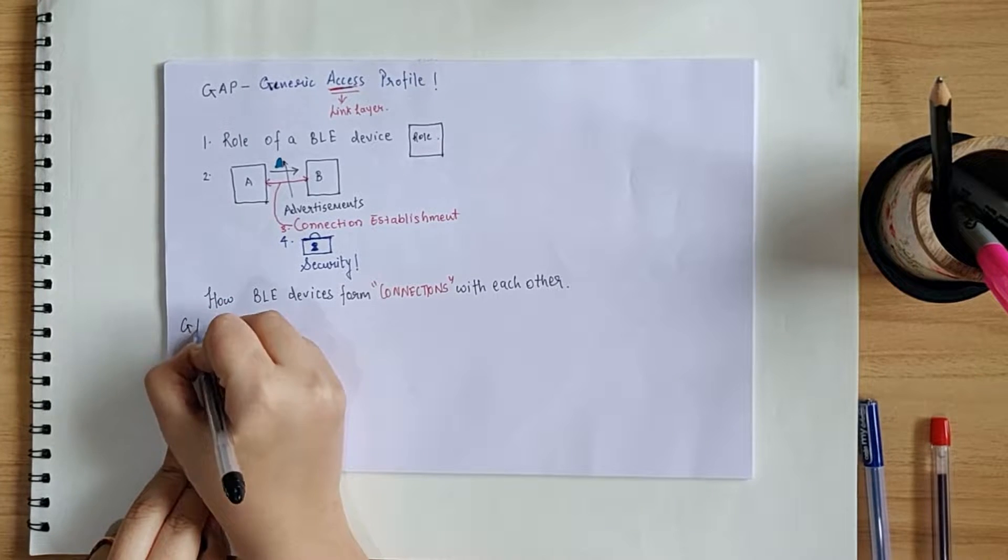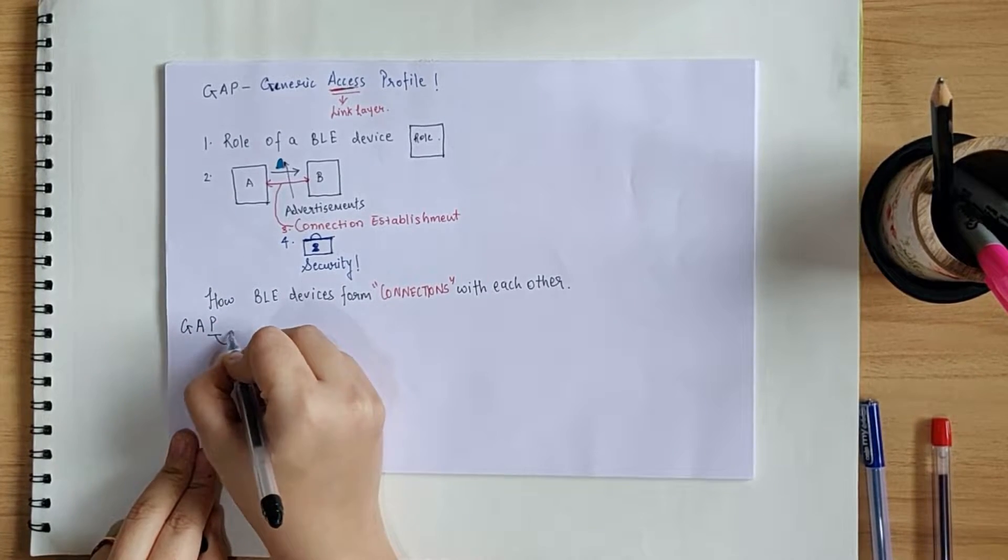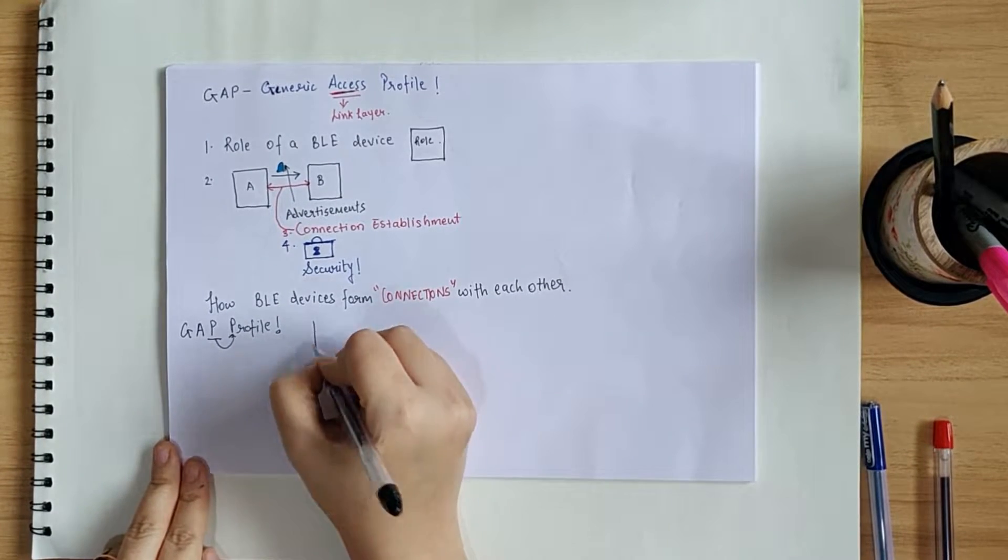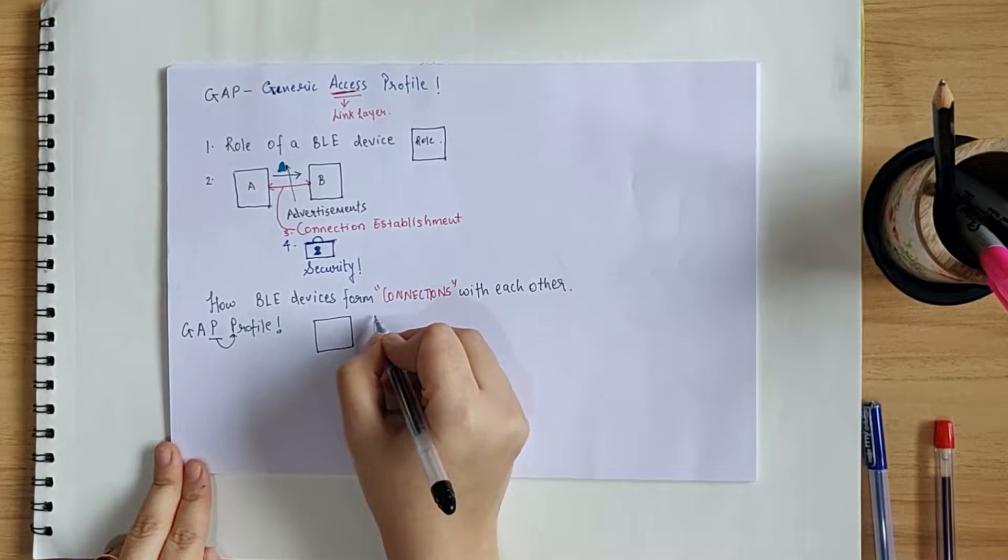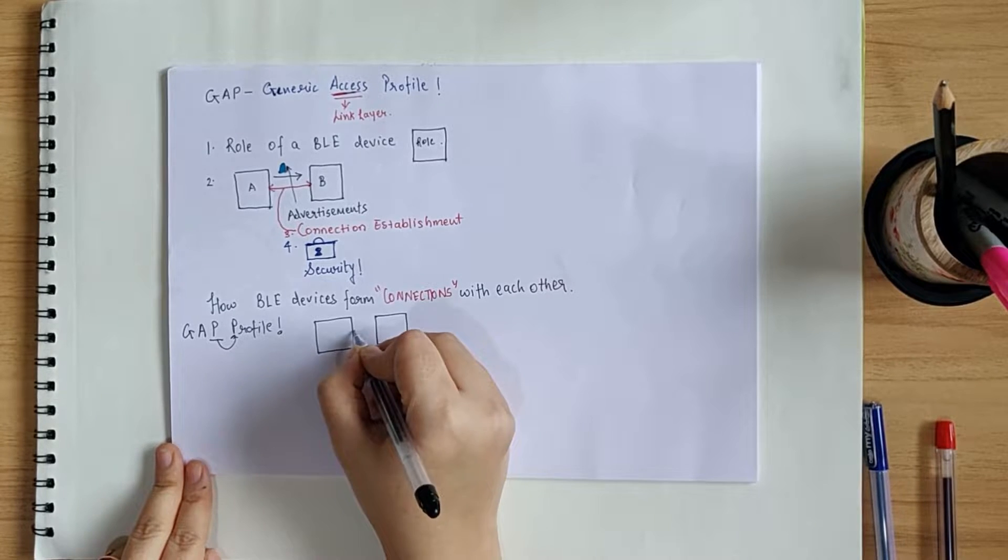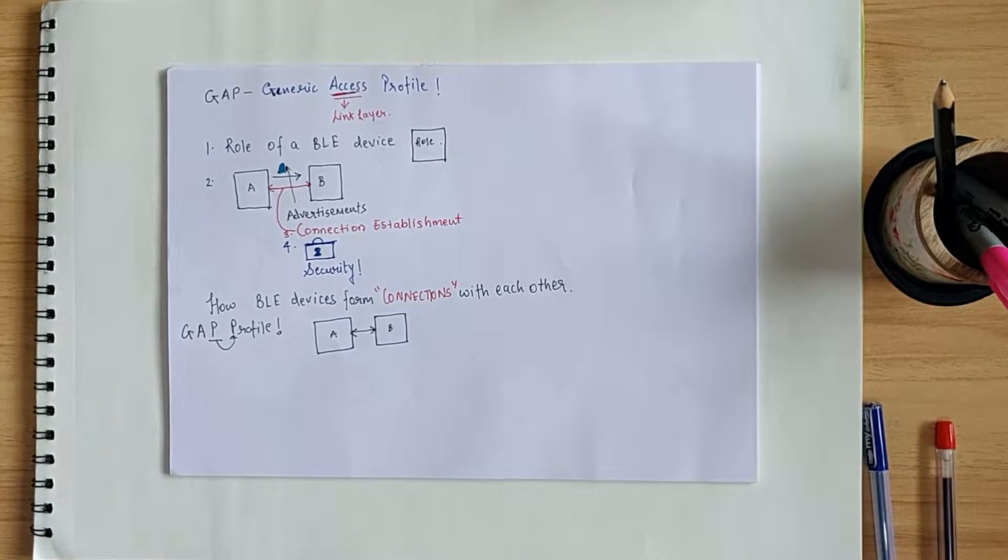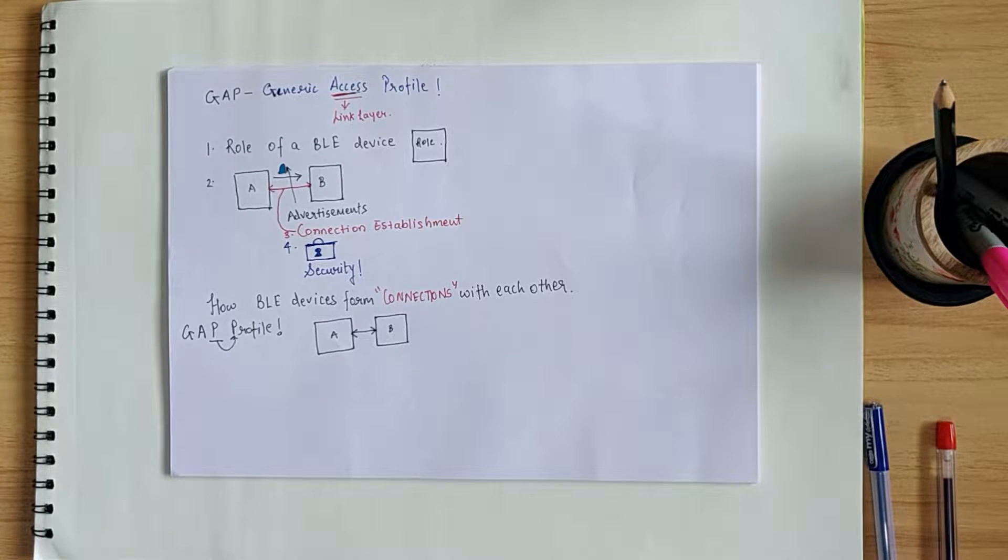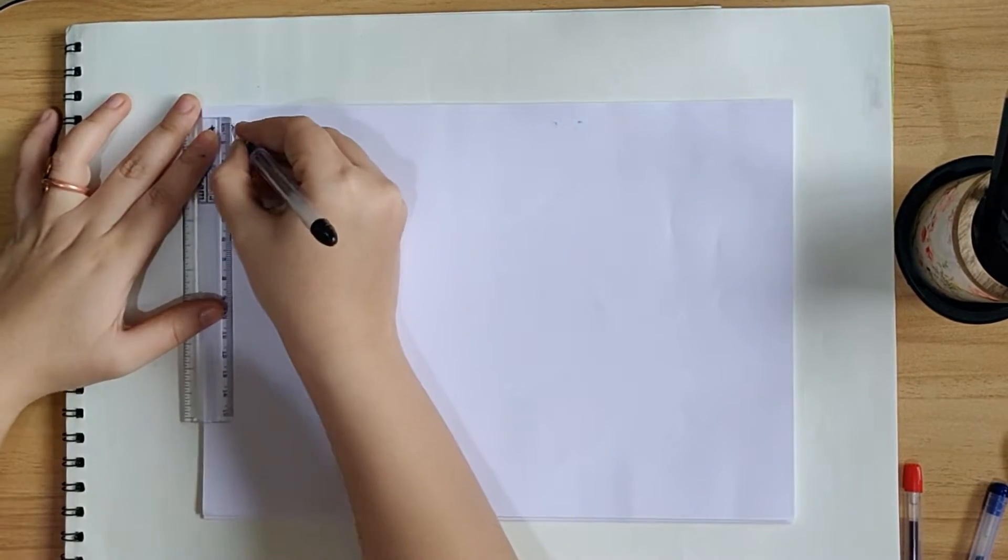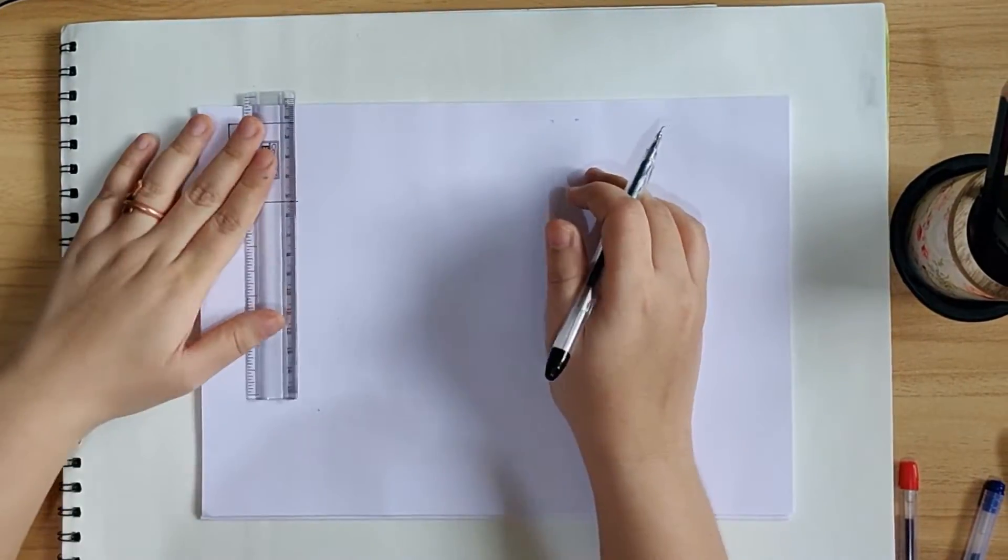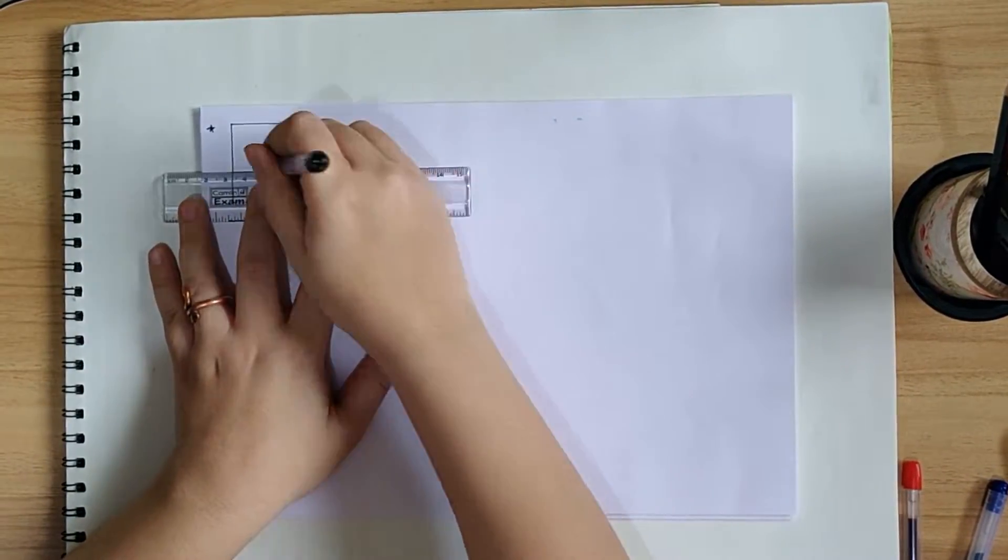Now, one may ask like what is the meaning of profile in the context of GAP? So profile defines the usage of the protocol in a particular way in order to achieve a particular goal. And the goal in this case would be forming a connection between two BLE devices. Now for this, GAP defines strict roles for the devices.